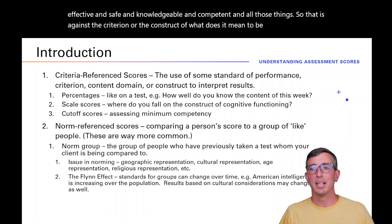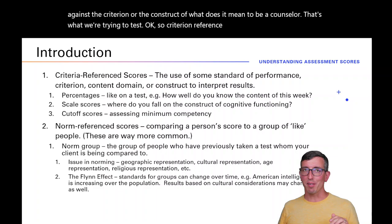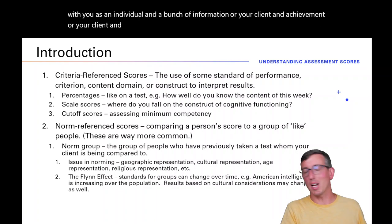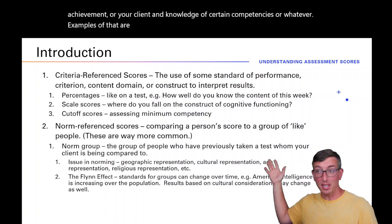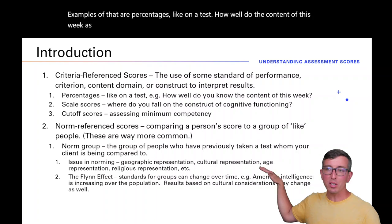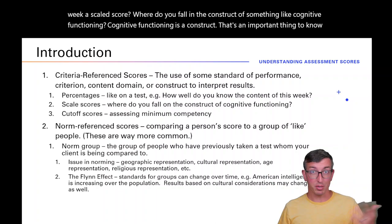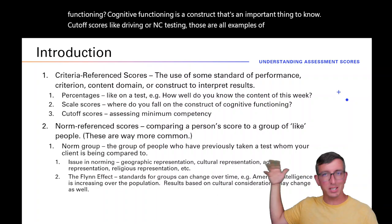Criterion-referenced scores have a lot more to do with you as an individual and a body of information — your client and achievement, or your client and knowledge of certain competencies. Examples include percentages on a test, scaled scores where you fall on a construct like cognitive functioning, and cutoff scores like in driving or NCE testing. Those are all examples of criterion-referenced scores.